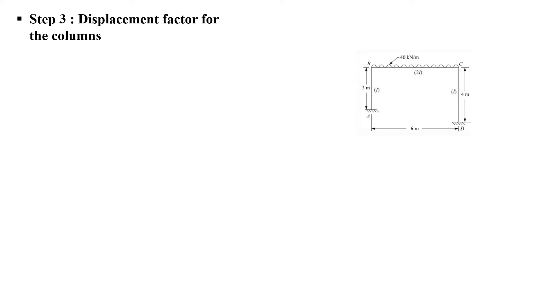When one column has a height of 3 meters and another has a height of 4 meters, we consider a convenient story height HR for the story moment calculation. For two columns, we apply one correction factor each — CAB and CCD — where CAB is computed using the formula: convenient story height HR divided by HAB.